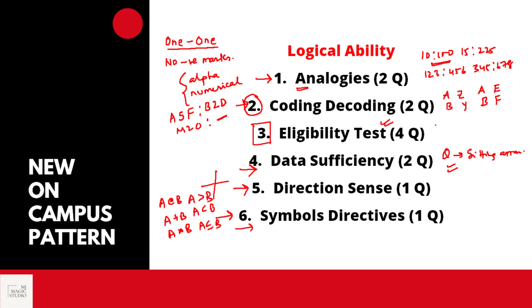The last four questions would be from eligibility test and there will be two tests. One test data would be given and based on that, two individuals' data would be given. We need to identify whether those people are eligible according to the given situation or not. There will be two test data, and with each test data two persons' names would be associated. Please be sure when you are marking — go through the entire data very thoroughly, because there is a high chance that data may be insufficient.